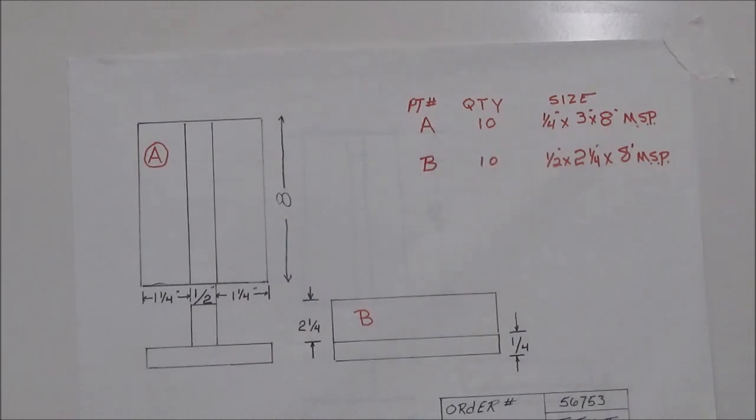Knowing from my title block that the number required was ten, I can enter ten into my quantity size side. And when it comes to size, I know that this is going to be one quarter inch thick by three inches wide by eight inches long. And it's going to be MSP. This is a new abbreviation for you. And that stands for mild steel plate. So, make sure that you get that. You also might just see mild steel, but it's going to be mild steel plate.